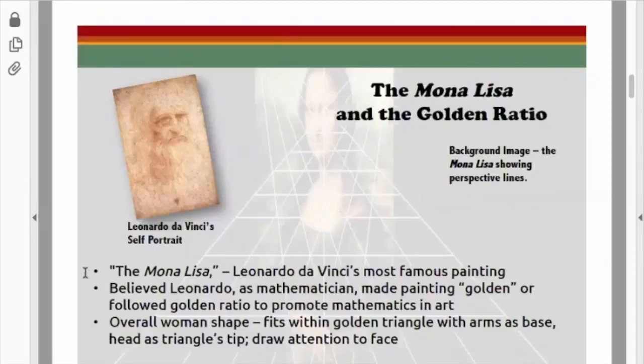The Mona Lisa is da Vinci's most famous painting, and it's believed that Leonardo as a mathematician made the painting golden, or followed the golden ratio to promote mathematics in art.